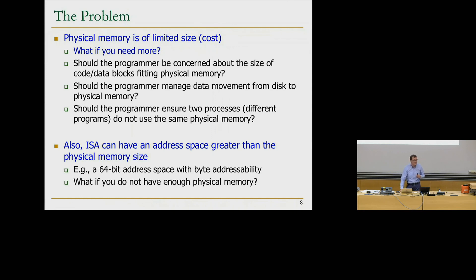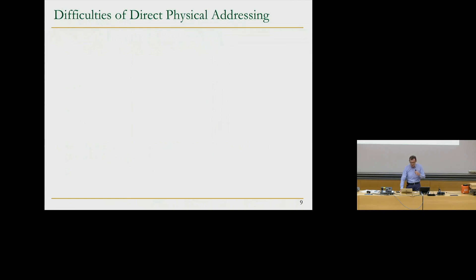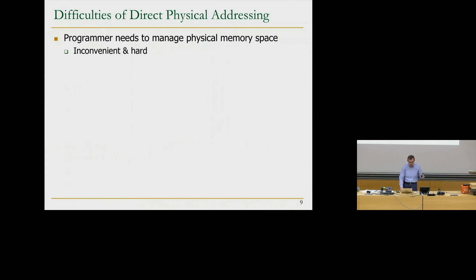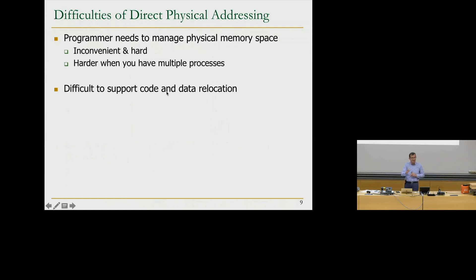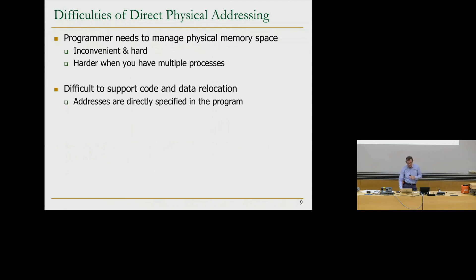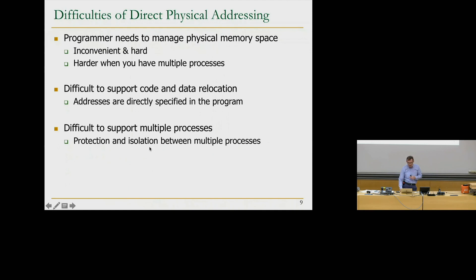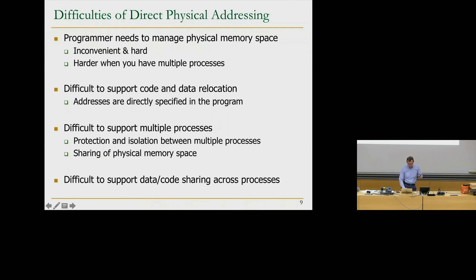You need something in between the programmer's addresses and the real physical structures of memory. There are multiple difficulties of direct physical addressing: programming needs to manage physical memory space, which is inconvenient and hard. It's difficult to decide when you're running out of physical memory, what to put on disk, and what to bring back. It's even harder with multiple processes. It's also difficult to support code and data relocation, to support multiple processes, and to ensure protection and isolation between processes.